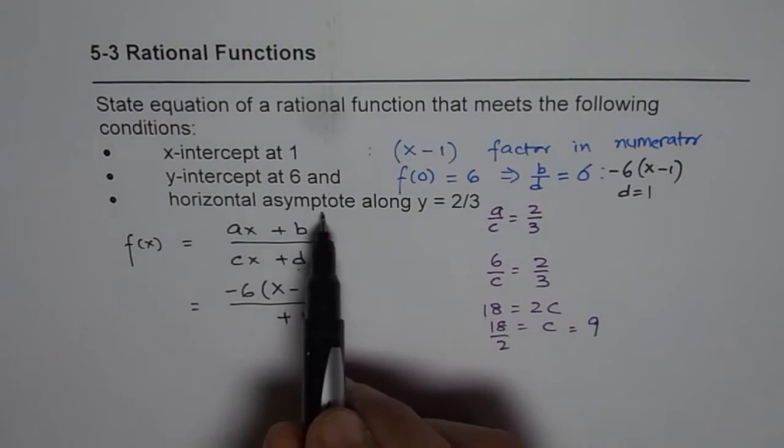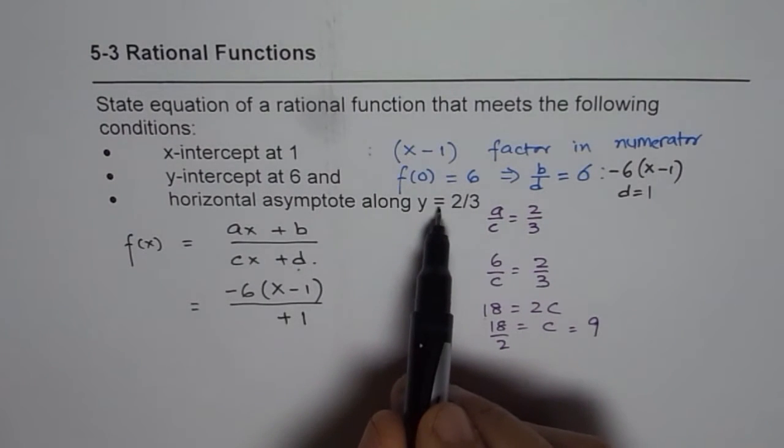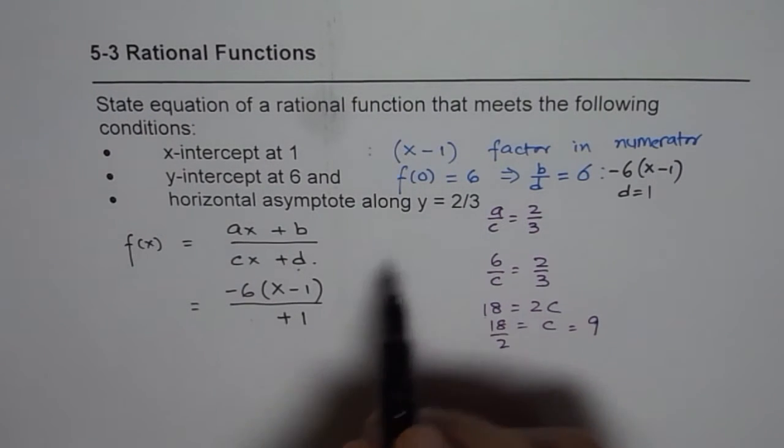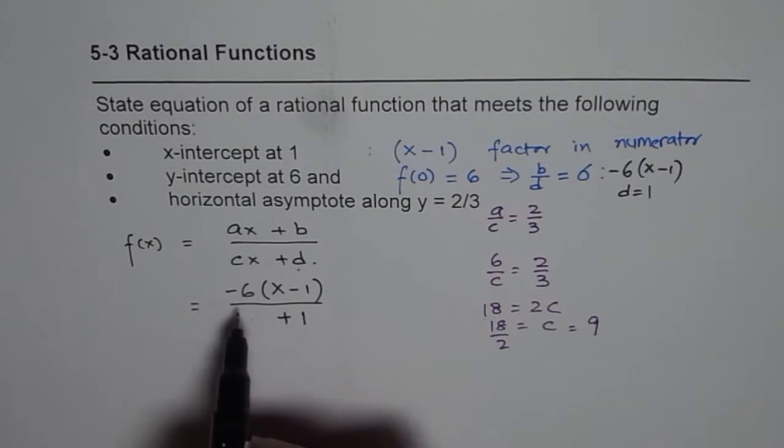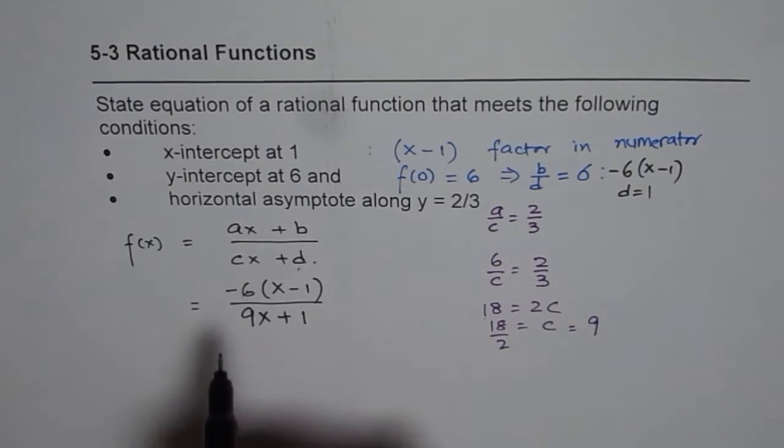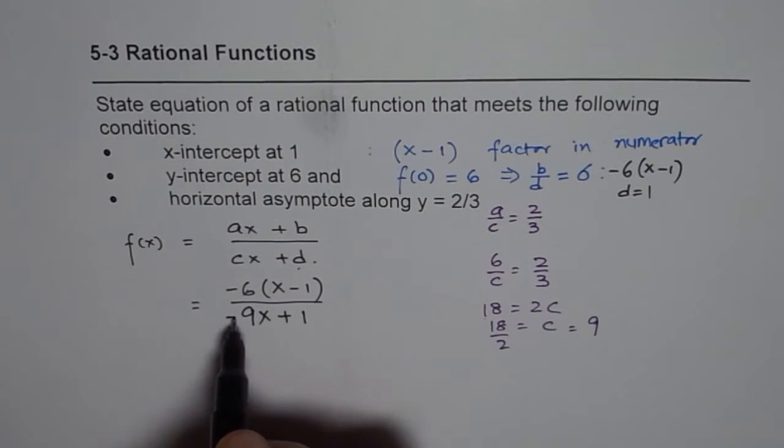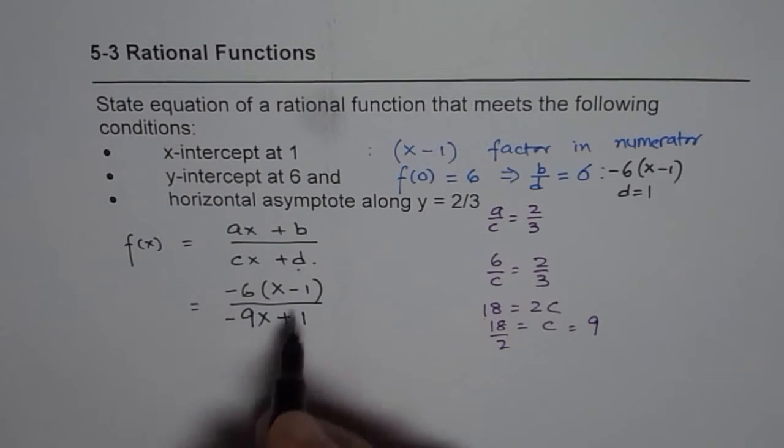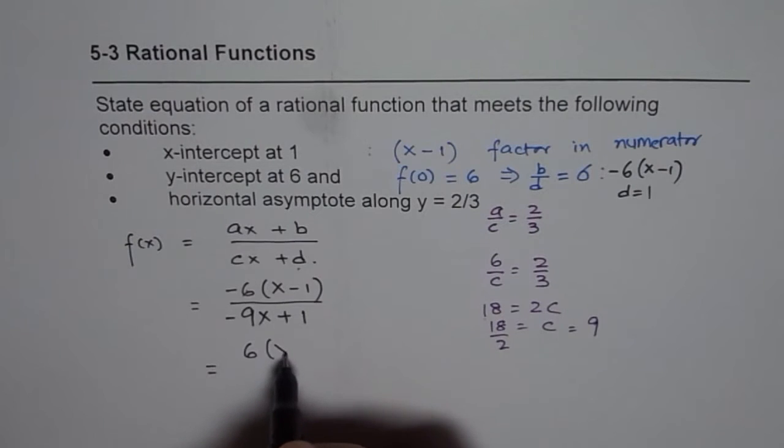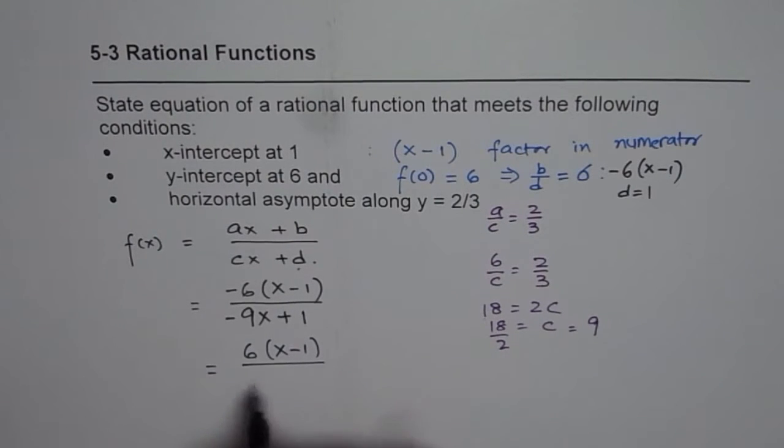Since I have horizontal asymptote at y equals 2 over 3, the ratio is 6 over 9 which works here. Since we need negative, we can write minus here too. A better way would be to write 6 times x minus 1 over 9x minus 1.